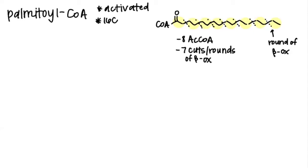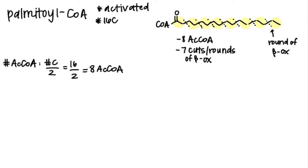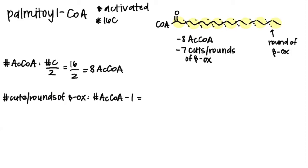Now let's do the math shortcuts. For even carbon fats, the number of acetyl-CoA is the total number of carbons divided by two. So in this case we have eight acetyl-CoA. For the number of cuts or rounds of beta-oxidation, you take the number of acetyl-CoA and subtract by one. So in this case we get seven cuts or rounds of beta oxidation.